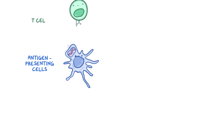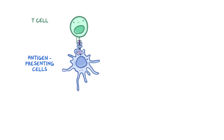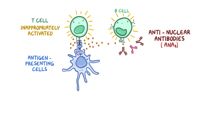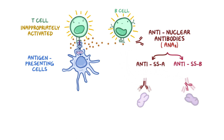These cell components get picked up by antigen-presenting cells and presented to T cells. In individuals with Sjogren's syndrome, a T cell gets inappropriately activated by these nuclear components and considers them to be foreign nuclear antigens. The T cells then activate B cells, which start producing anti-nuclear antibodies, or ANAs, which are antibodies against the nuclear antigens. Two types of ANAs formed in Sjogren's syndrome are anti-SSA and anti-SSB antibodies, which are formed against the ribonucleoproteins SSA and SSB.